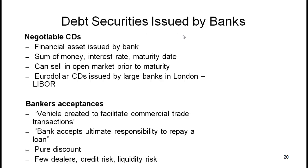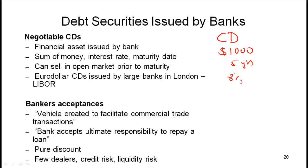We can also have debt securities issued by banks, including negotiable CDs and banker's acceptances. A CD, or certificate of deposit, is where an investor puts a fixed amount of money in a bank — say $1,000 — and the bank offers a given interest rate, say 8%, if the investor keeps the money for a certain period, say five years. If the investor withdraws earlier, there is a fee.